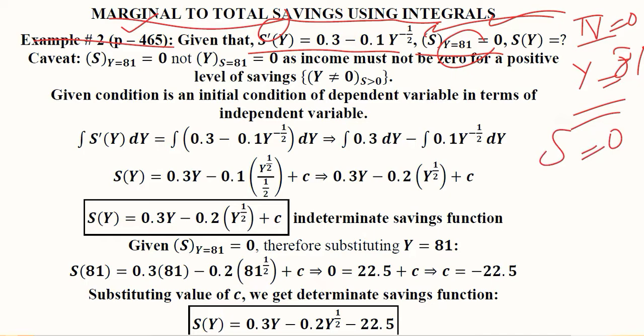This is opposite to what usually happens in an initial condition where the independent variable is zero. Here it is happening not due to mathematical reasons but due to economic reasons, because saving is dependent upon income and till a certain level of income one cannot save.